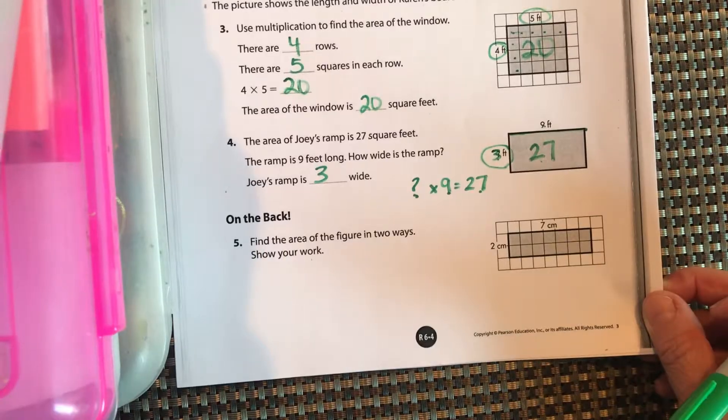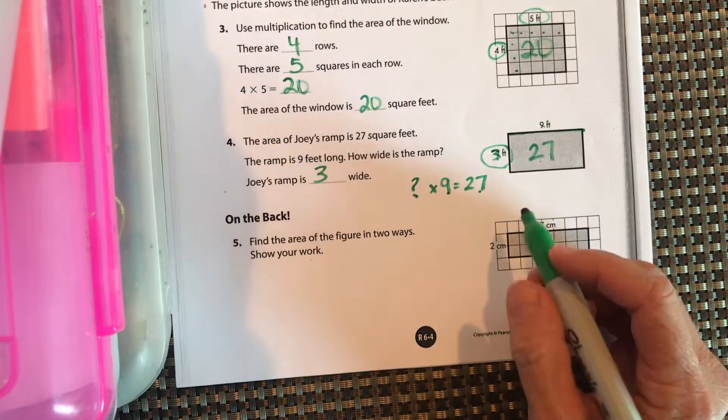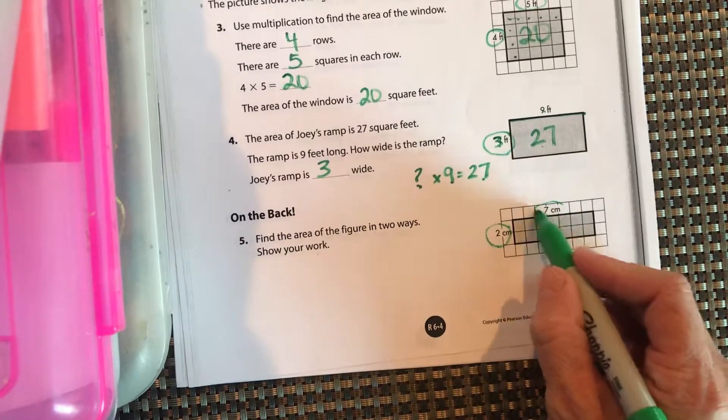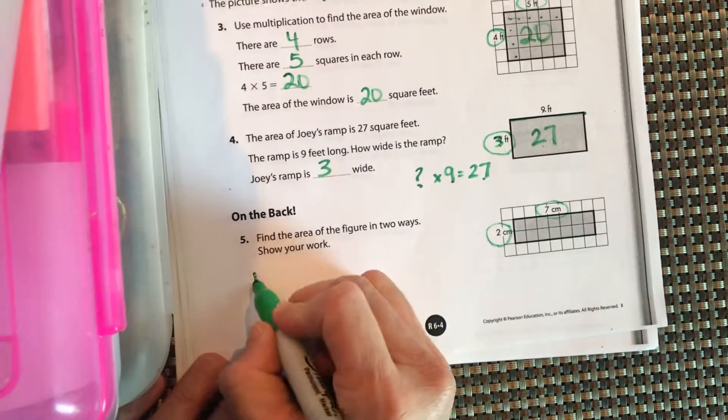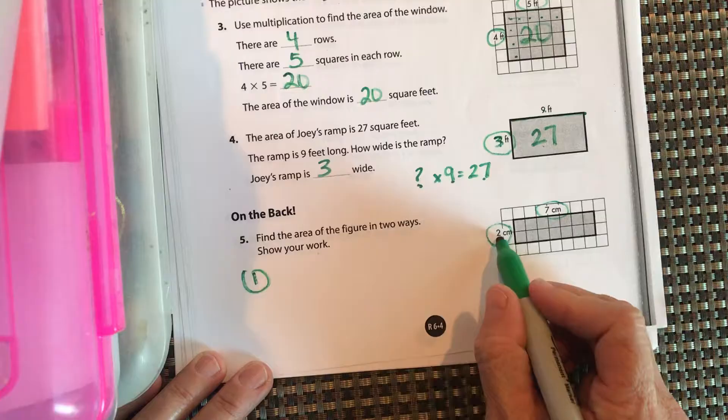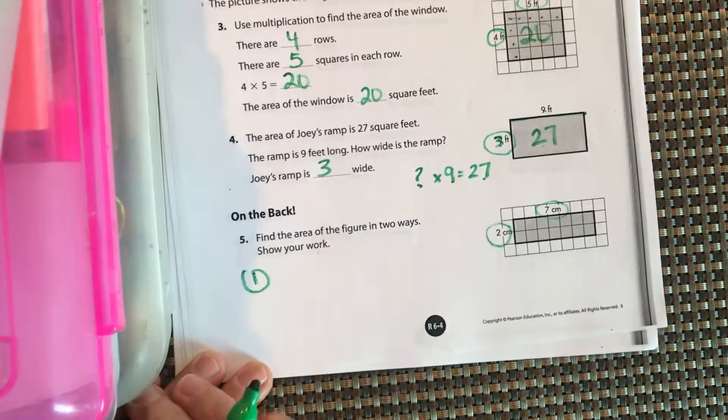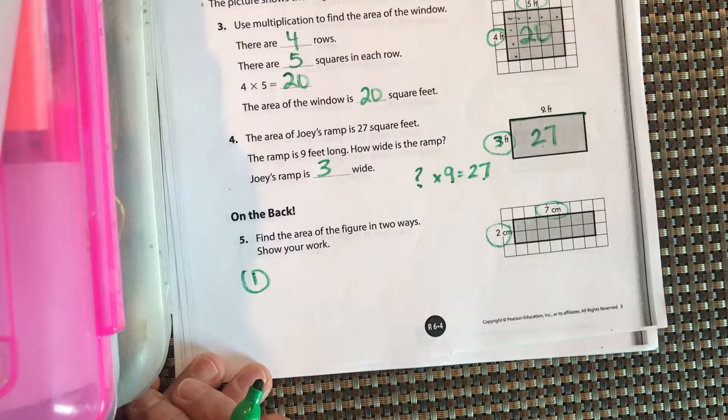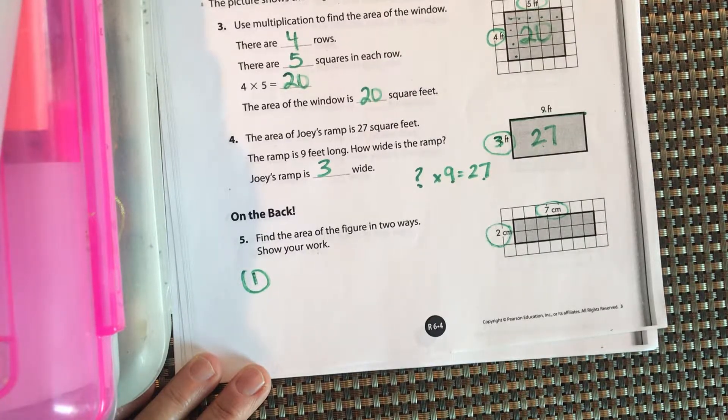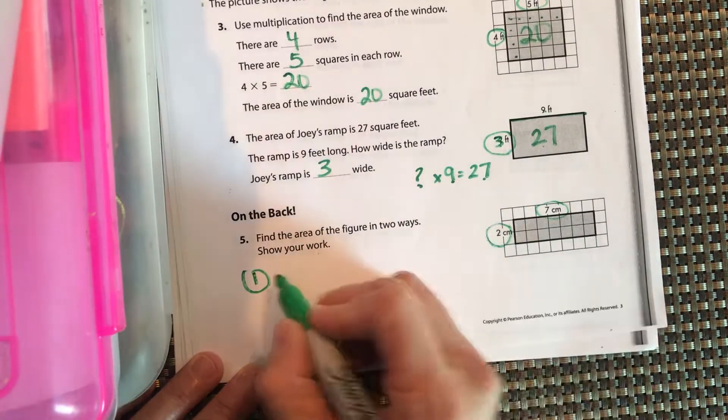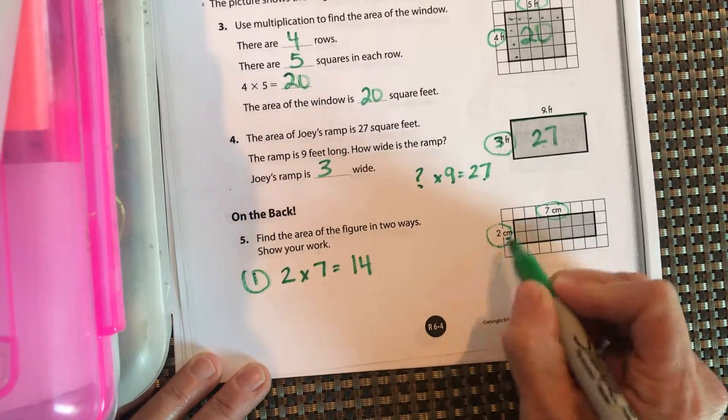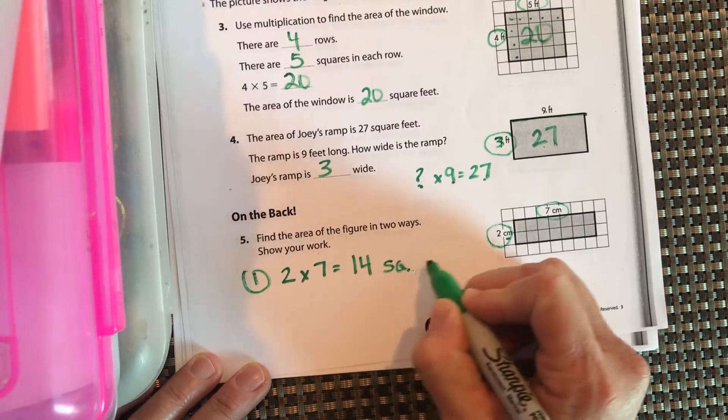Okay, find the area of the figure in two ways. So they've given us the number of rows and the number in each row. First of all, figure out the area inside of there using multiplication. Pause it and do that. Okay, you should have come up with 2 times 7 equals 14, and these are centimeters, so it has to be square centimeters.